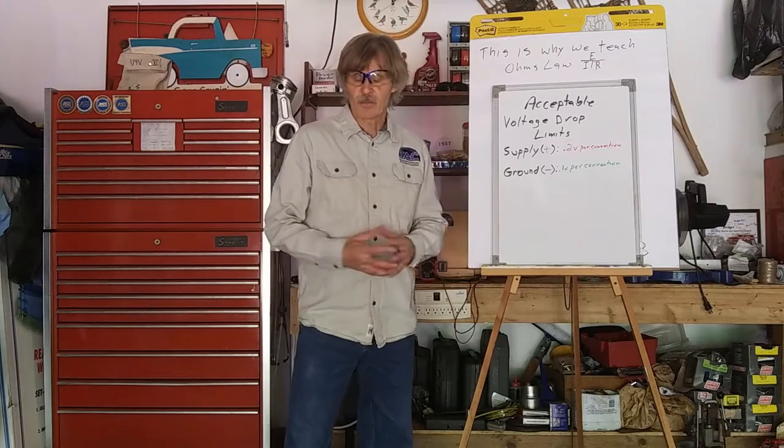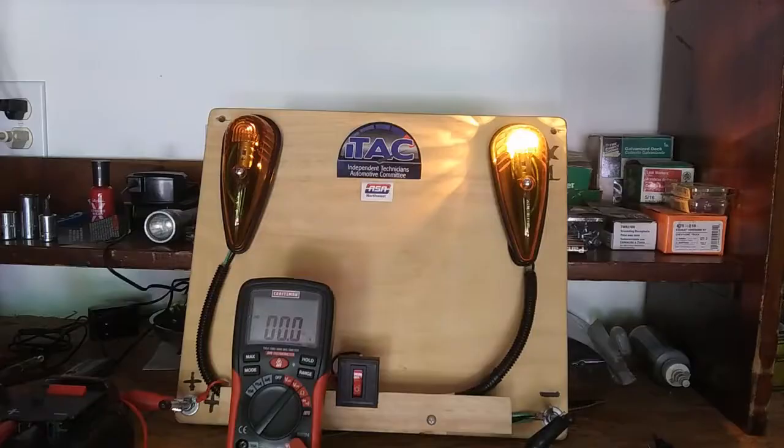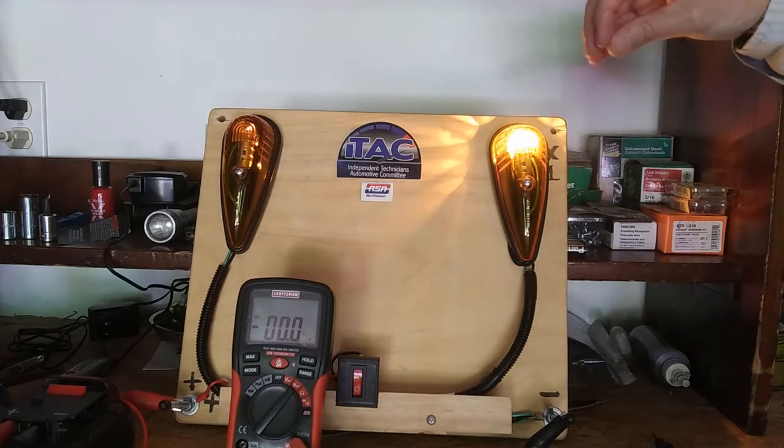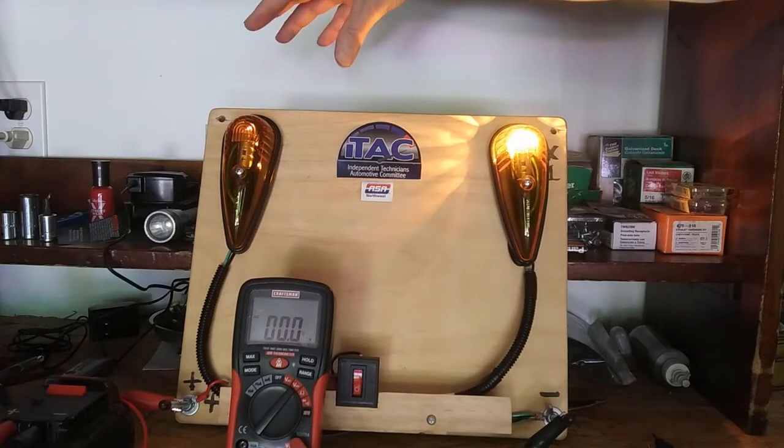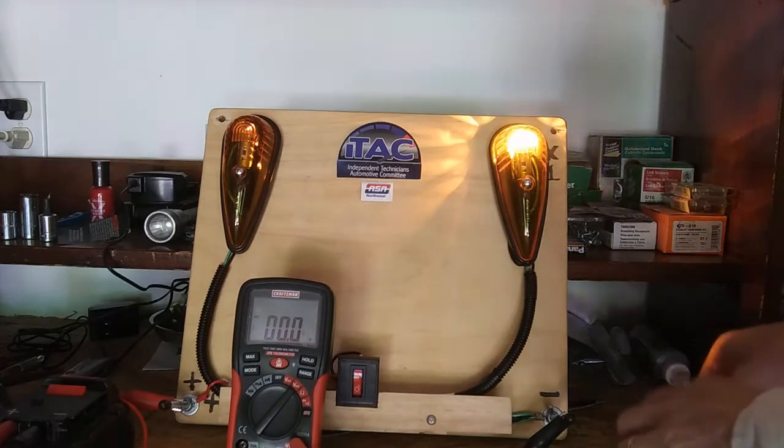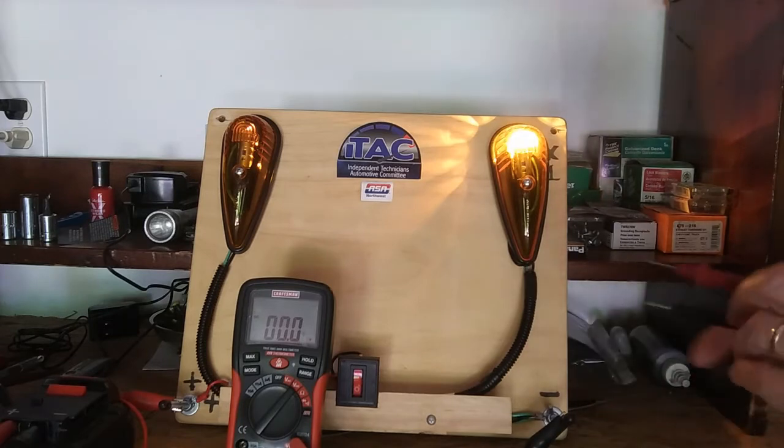Now we're going to switch to some actual testing. What we have here is a parallel circuit. That means we have source voltage, in this case at 16 volts, available to both of these light bulb or light fixtures here. As you can see, the left light is dim compared to the right side. To keep this short, most dim light complaints are on the ground circuit, but it could also be on the supply side or the positive side.